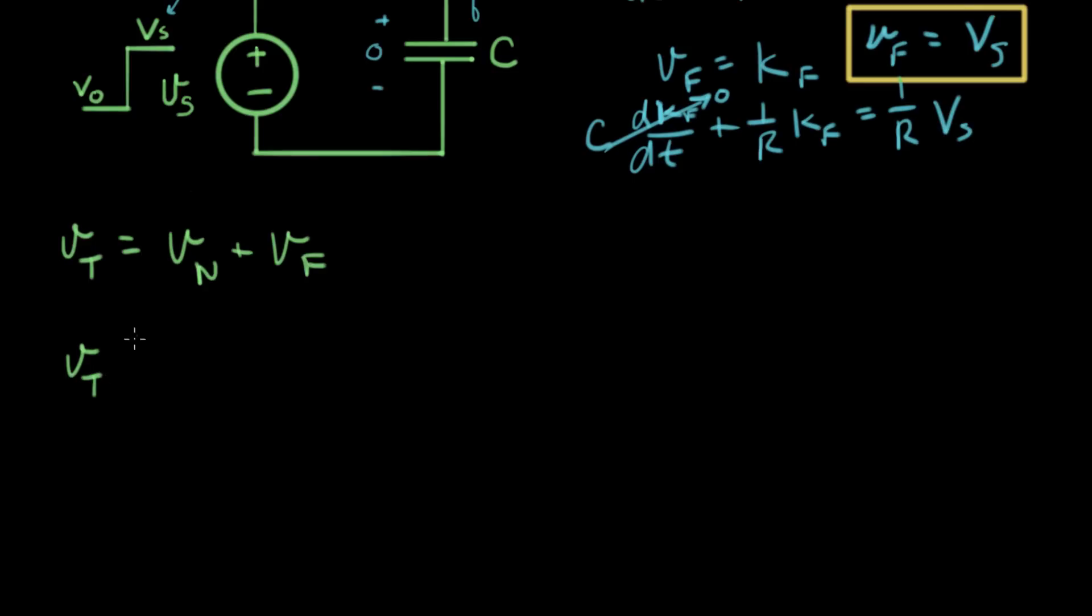Okay, VT equals K some constant times e to the minus t over RC, and let's add the forced response. And the forced response is right here. It's VS. And we're getting close. The only thing we have left is we have to figure out this value now. We have to figure out the gain factor in front of the exponential term of the natural response.